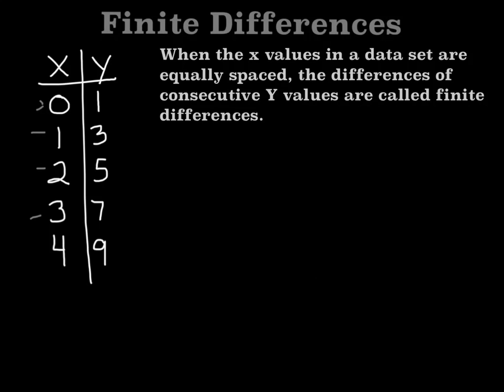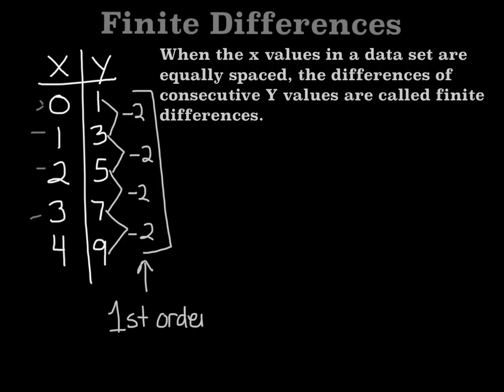When the x values in a data are equally spaced, the differences of consecutive y values, that's called finite differences. So we're going to find the differences. We're going to subtract. 1 minus 3, we get negative 2. 3 minus 5, we get negative 2. 5 minus 7, we get negative 2. And 7 minus 9 is negative 2. So they're all the same, and we only had to do one set of differences. Since the very first time we did this, these were all the same, we call this first order differences. And that means that this is a linear function.